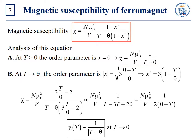In fact, the magnetic susceptibility diverges as temperature tends to theta from the right. The magnetization itself is finite, but its rate of change becomes infinite as the field tends to zero and temperature tends to theta. At T tending to theta from the left, we know the expression for the order parameter as well. In this case, the expression for magnetic susceptibility will be the following. So, at T tending to theta from the left, magnetic susceptibility also diverges, and the character of divergence is the same as when T tends to theta from the right.